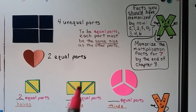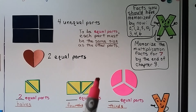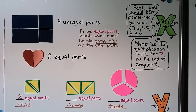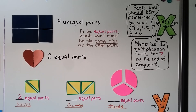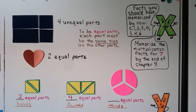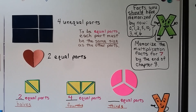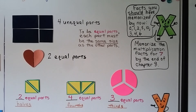Now this rectangle was cut here, then cut on a diagonal, then cut on a diagonal this way. So how many equal parts do we have? We have one, two, three, four equal parts. Four equal parts make fourths. Here we have a pink circle, and we have one, two, three equal parts. Three equal parts make thirds. We have three thirds.